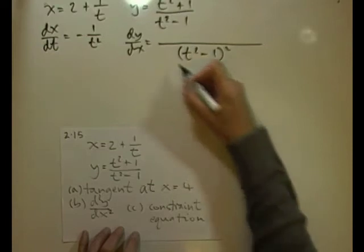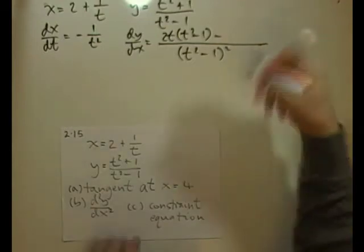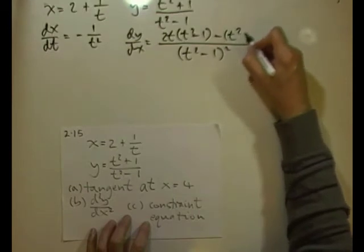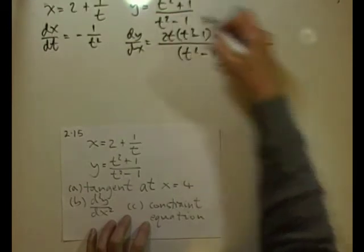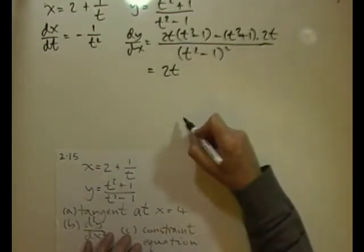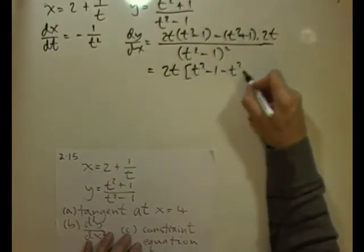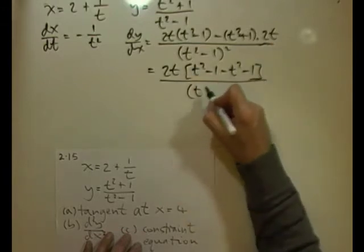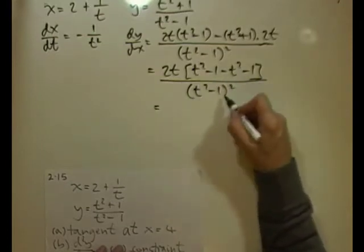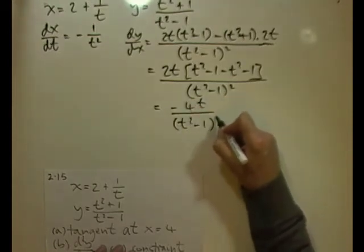Differentiating the first gives 2t times (t² − 1), minus — because of the quotient rule — (t² + 1) times 2t. Taking out the common factor 2t leaves (t² − 1) minus (t² + 1), which is −2, all over (t² − 1) squared. So dy/dt = −4t / (t² − 1)².